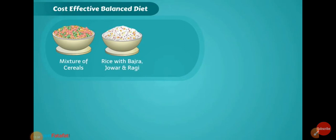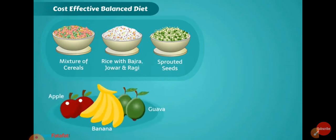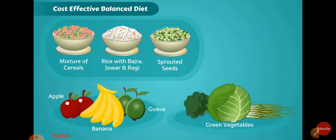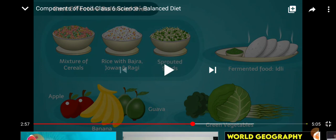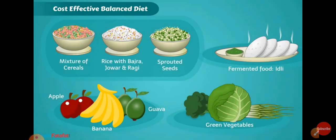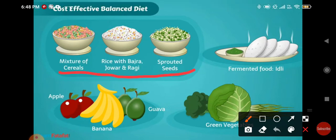The cost-effective balanced diet is not expensive for all of us. It includes cereals, bajra, jowar, ragi, sprouted seeds, fruits, green leafy vegetables, or fermented food like idli. These are all a mixture of different types of nutrients. All the major nutrients required by our body are covered in this type of balanced diet. Cereals, bajra, jowar, ragi, and sprouted seeds are a good source of protein.